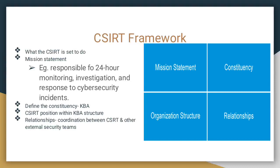The framework defines what the CSIRT is set to do, and it should consist of around four statements: a mission statement, constituency, the organization structure, and the relationships. You're supposed to come up with a simple mission statement for the CSIRT — for example, a statement which says 'responsible for 24-hour monitoring, investigation, and response to security incidents.'